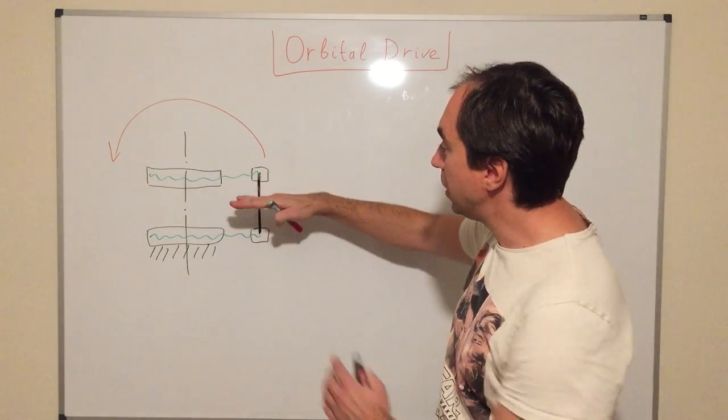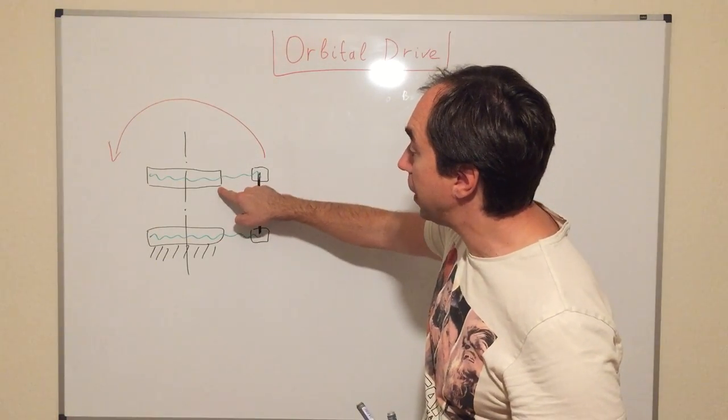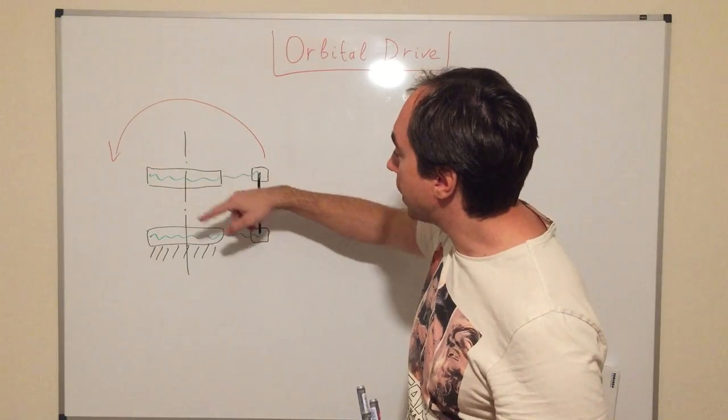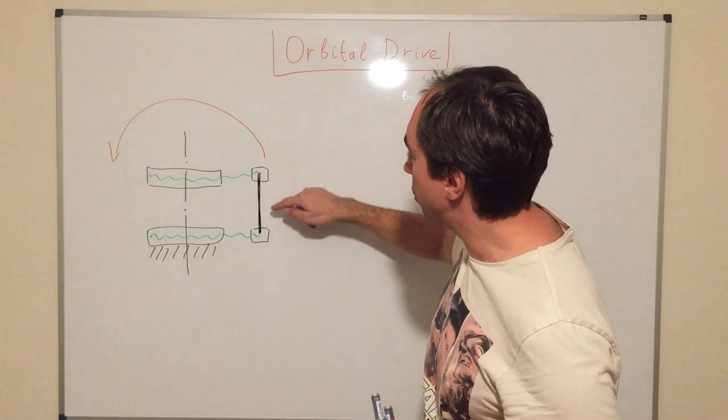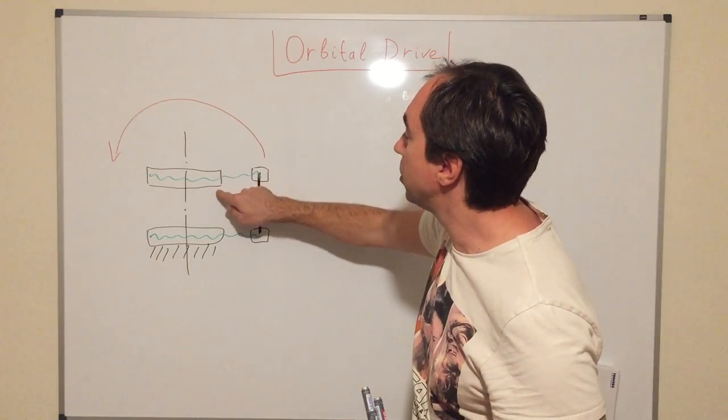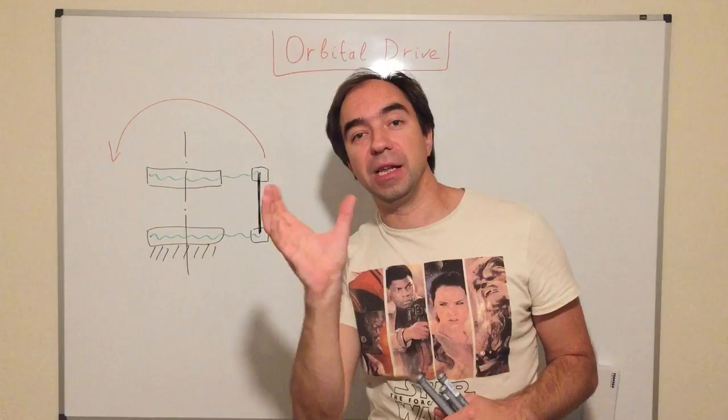But, if we introduce in this system a small asymmetry, like for example if this pulley is going to be just a little bit smaller than this one, in this case we will get a higher reduction ratio, because when we rotate this system around the main axis a couple of times, this pulley will rotate only just a little bit.